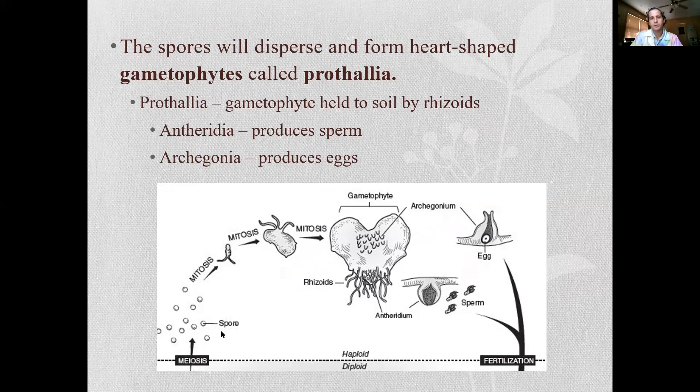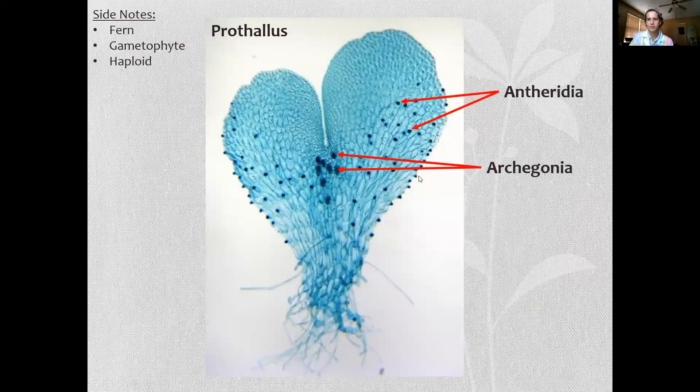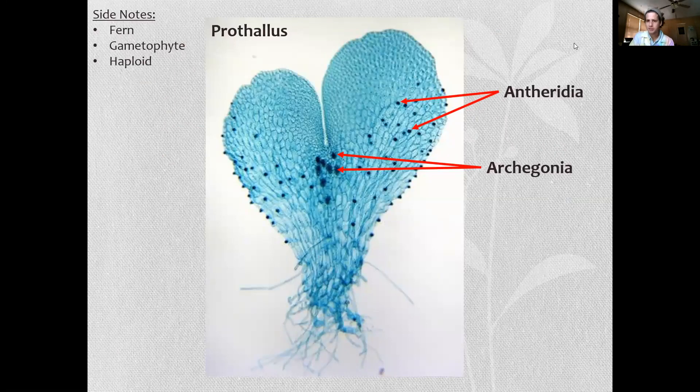So this sporangium are producing haploid spores through meiosis. Spores will disperse from the heart-shaped gametophytes called prothalia. Held to the soil by rhizoids, not true roots. Again antheridia producing sperm, archegonium producing eggs. Let's go ahead and take a look at that.